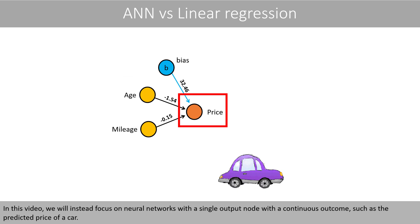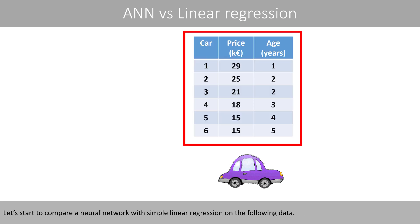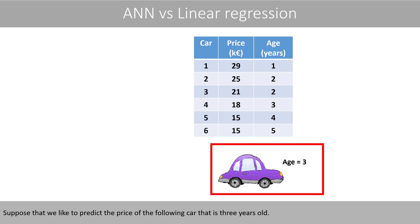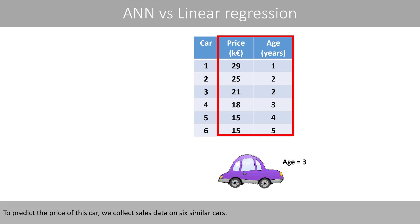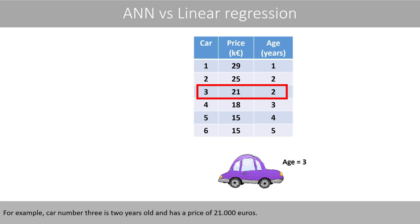In this video, we will instead focus on neural networks with a single output node with a continuous outcome, such as the predicted price of a car. Let's start to compare a neural network with simple linear regression. Suppose that we like to predict the price of a car that is 3 years old. To predict the price, we collect sales data on 6 similar cars. For example, car number 3 is 2 years old and has a price of 21,000 euros.